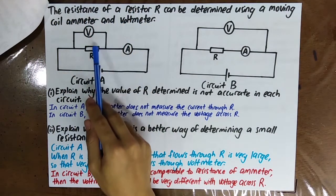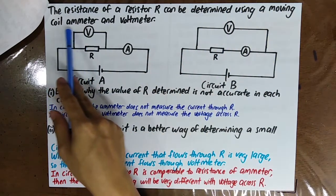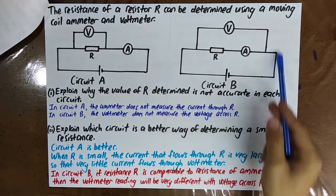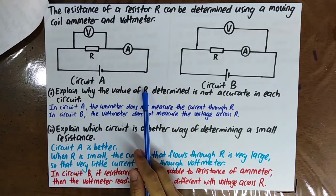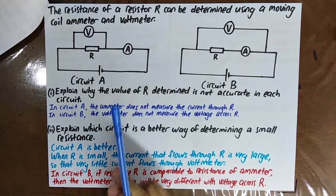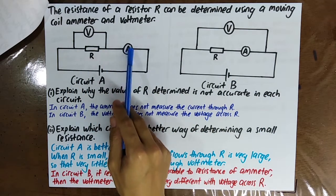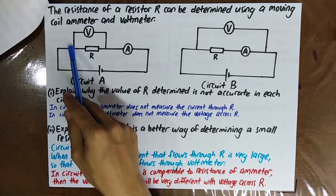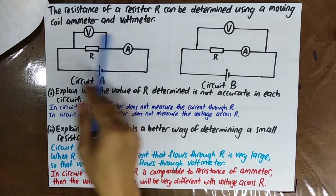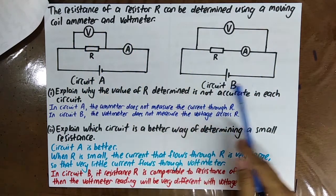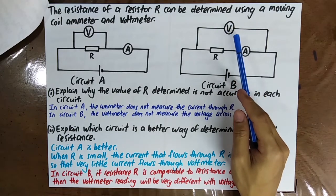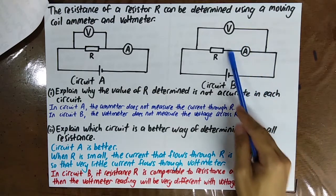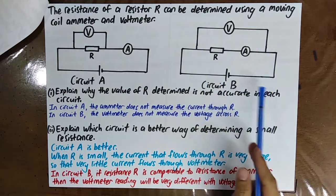The resistance of a resistor R can be determined by using a moving coil ammeter and voltmeter. This is circuit A and this is circuit B. Explain why the value of R determined is not accurate in each circuit. In circuit A, the ammeter measures the current through the resistor and also through the voltmeter, so this is not very accurate. In circuit B, the voltmeter measures the potential difference across the resistor and also across the ammeter, so this is also not a very good circuit.